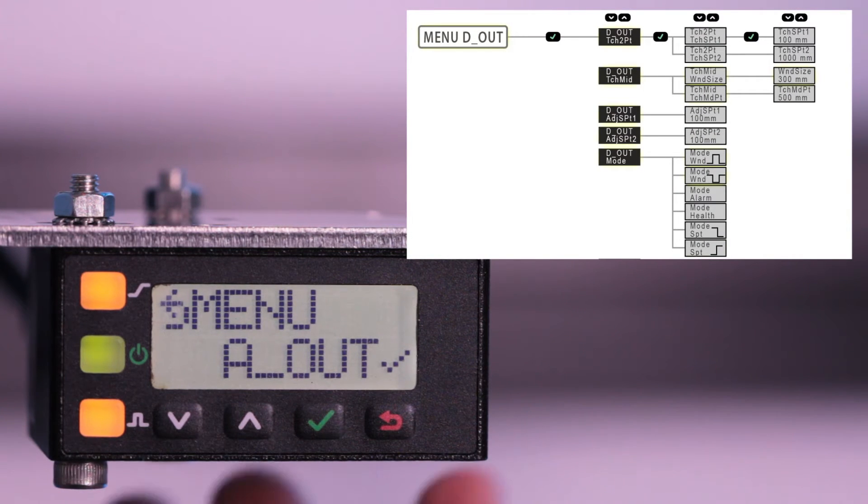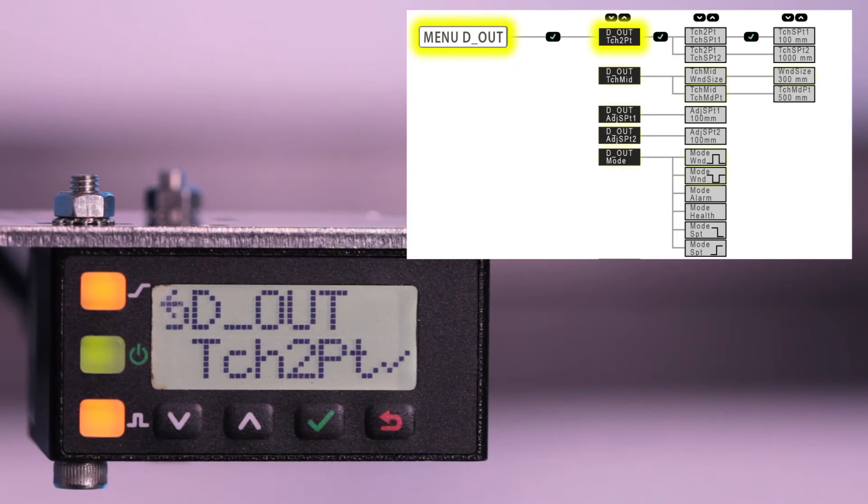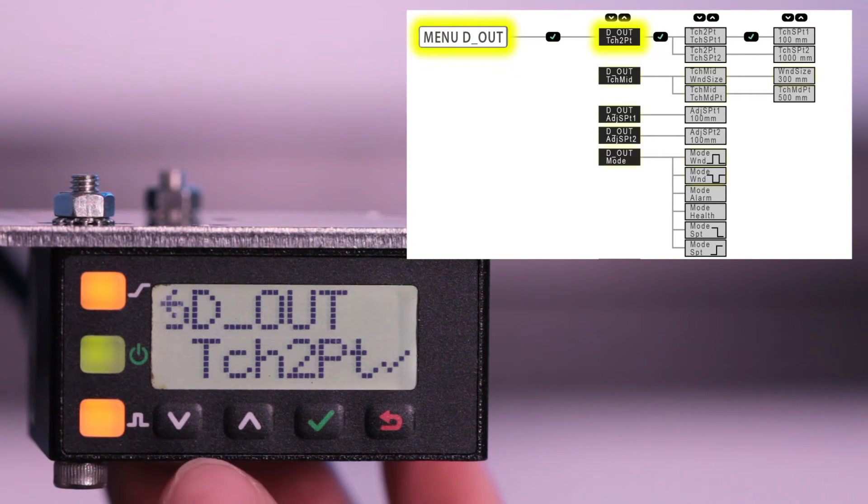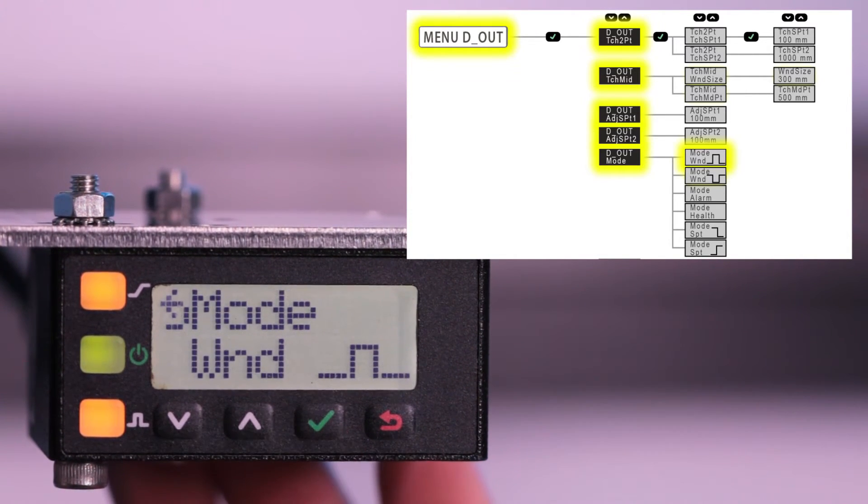Click down to the discrete output option and click enter to view the discrete output submenu. First is two-point static teach. Click down to cycle through the other options until getting to mode. Click enter to access the mode options.